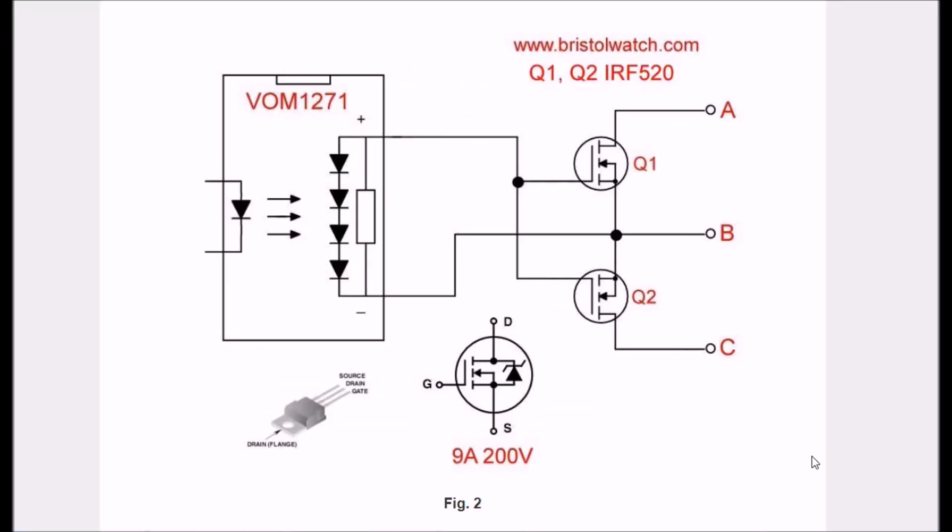If you saw my other video, this should look familiar, but there are a few differences. Again, I'm using the VOM1271 or similar photovoltaic optocoupler, but I have two IRF520 power MOSFETs rated at 9 amps at 200 volts. They are connected source to source, gate to gate. Gates go to positive, sources go to negative.